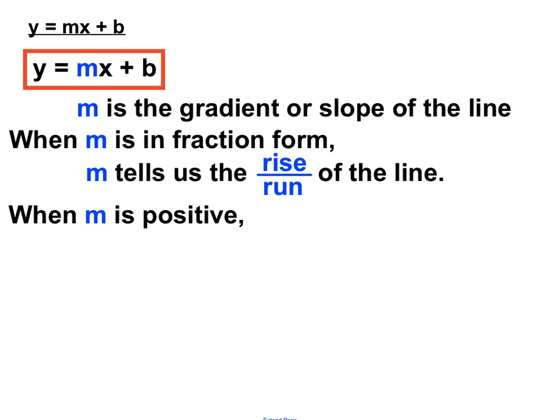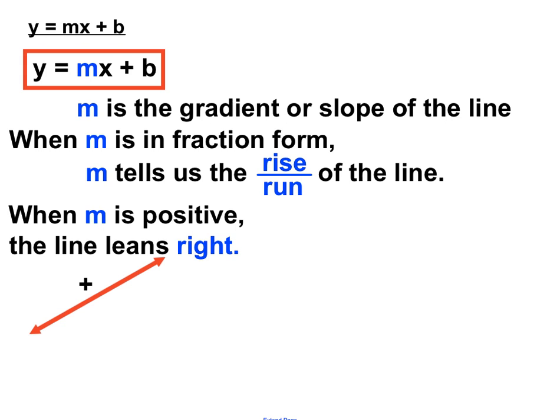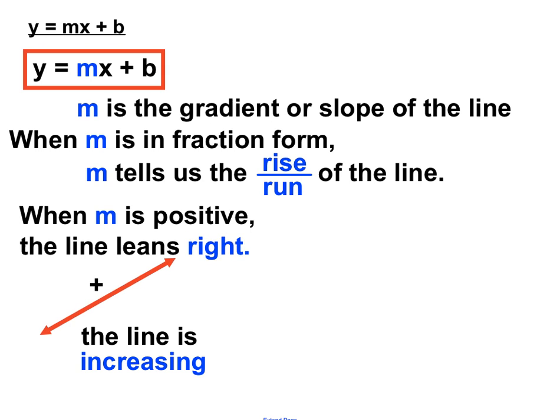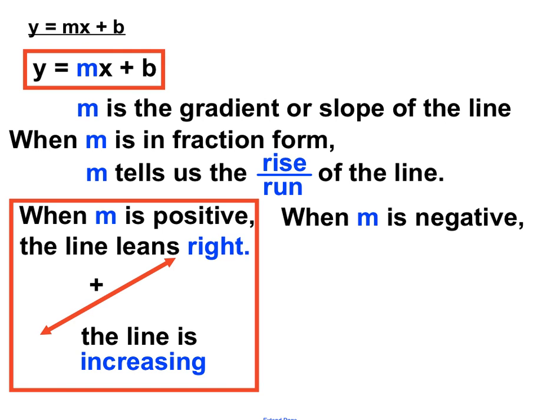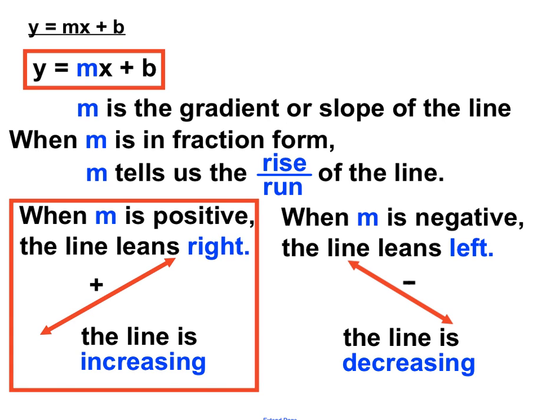When m is positive — when the number in front of x is positive — we know that the line leans to the right, and we say the line is increasing. Conversely, when m is negative — when the number in front of x is negative — we know that the line leans to the left and we'd say that the line is decreasing.